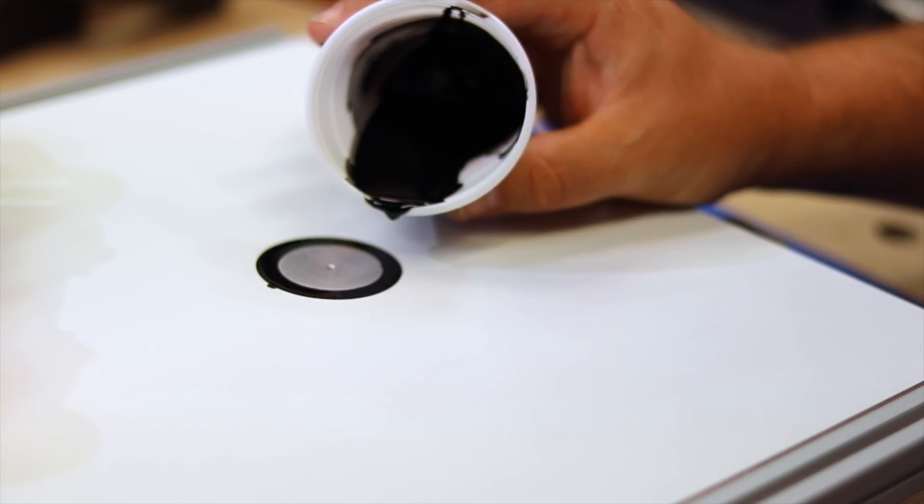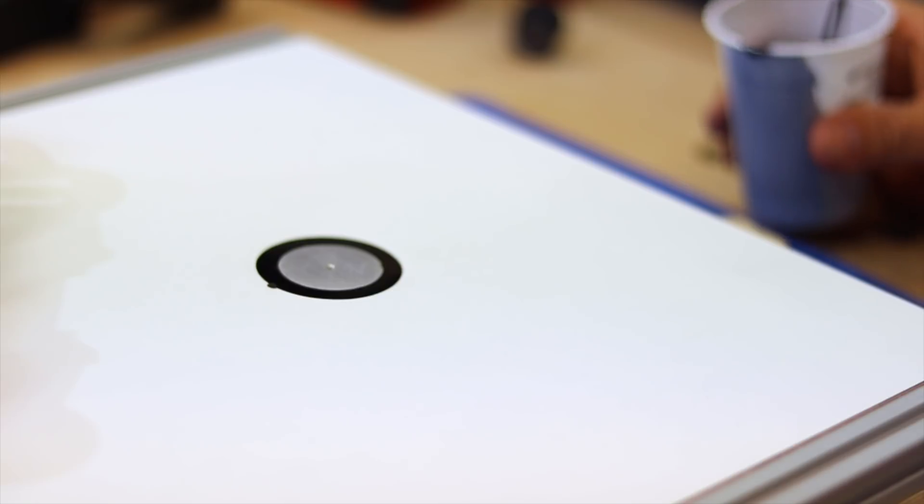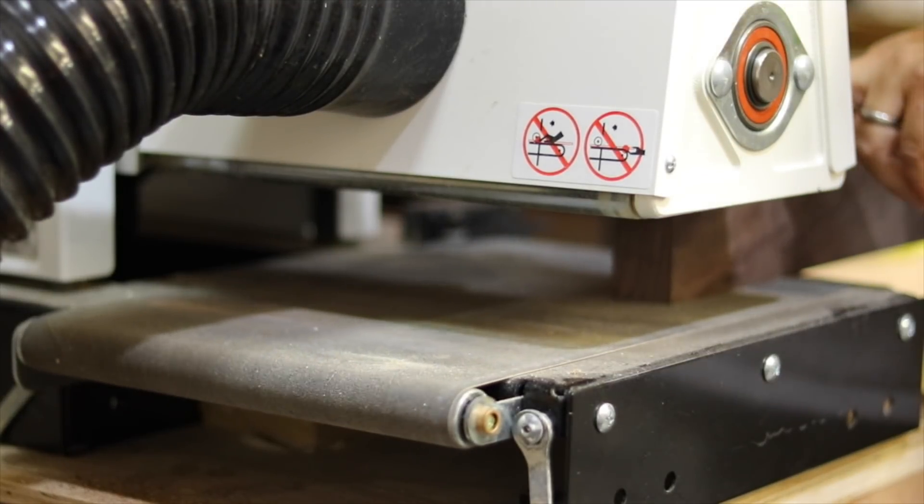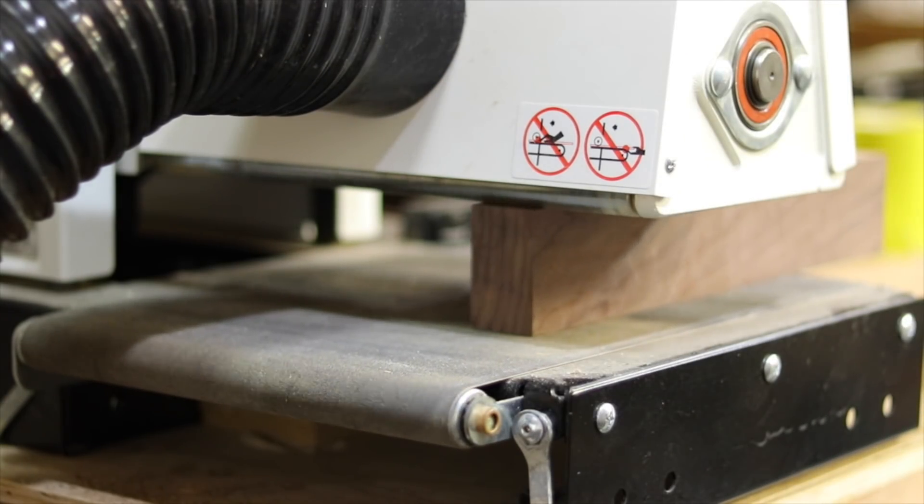Where the hole in the aluminum is, I have used a countersink bit by hand just to soften the very top edge to ensure the wire doesn't get snagged when using the arm to angle the wire.